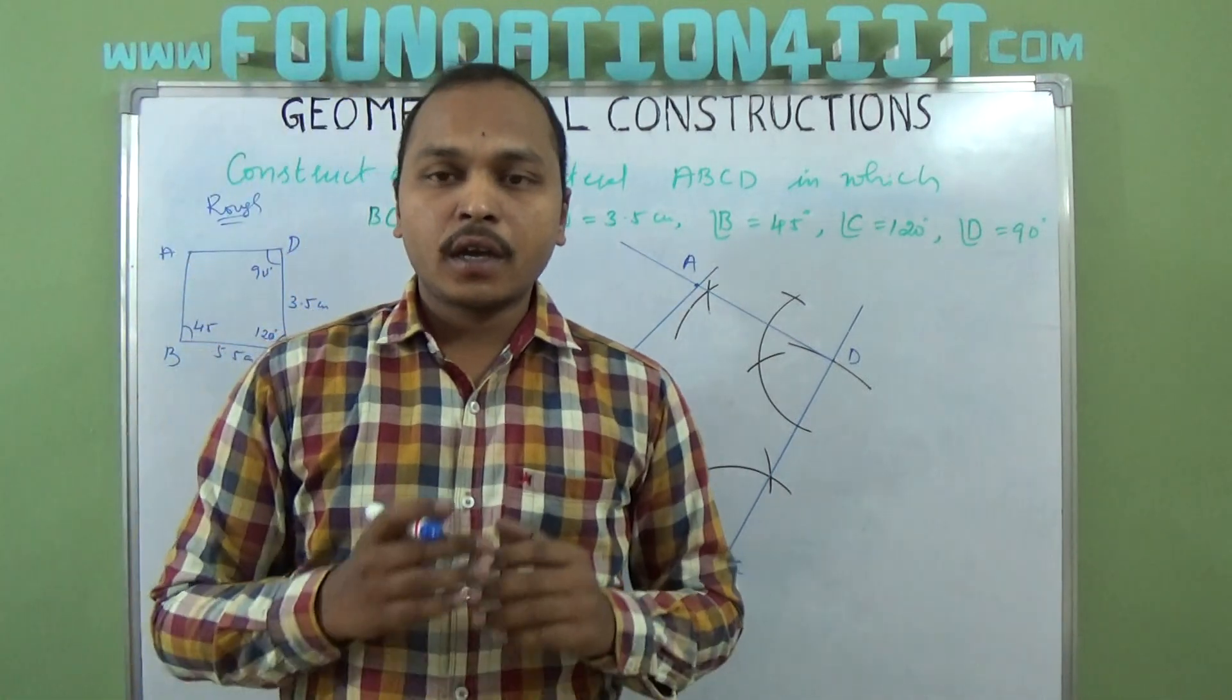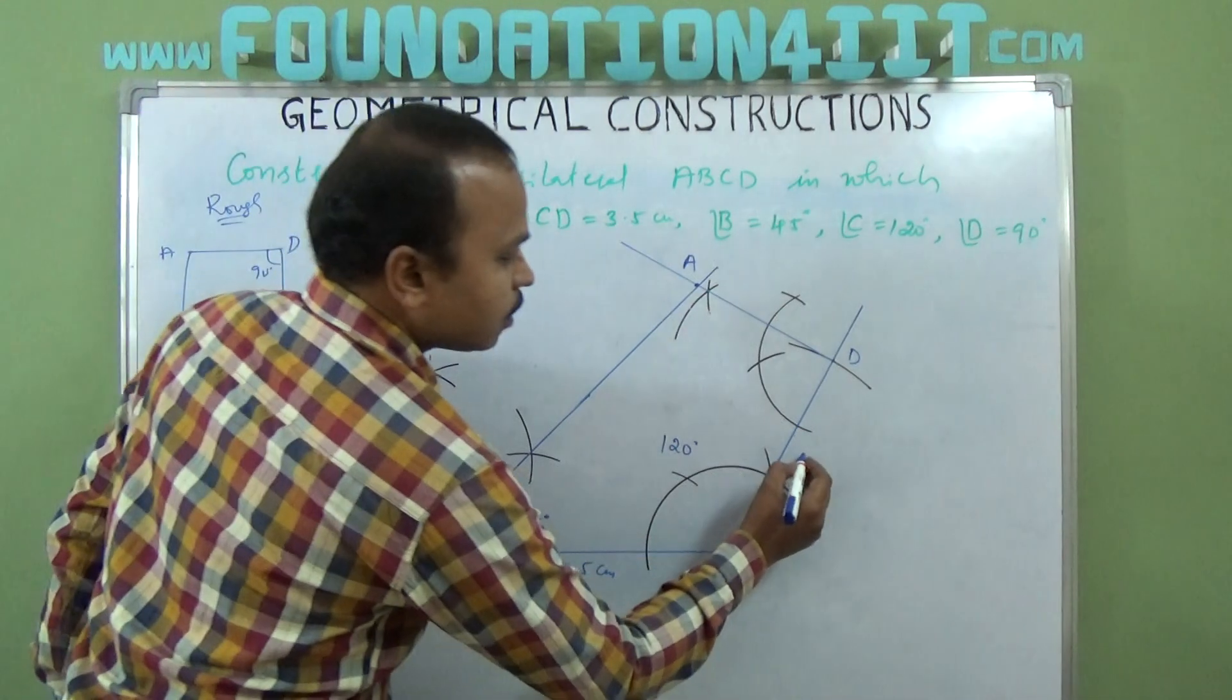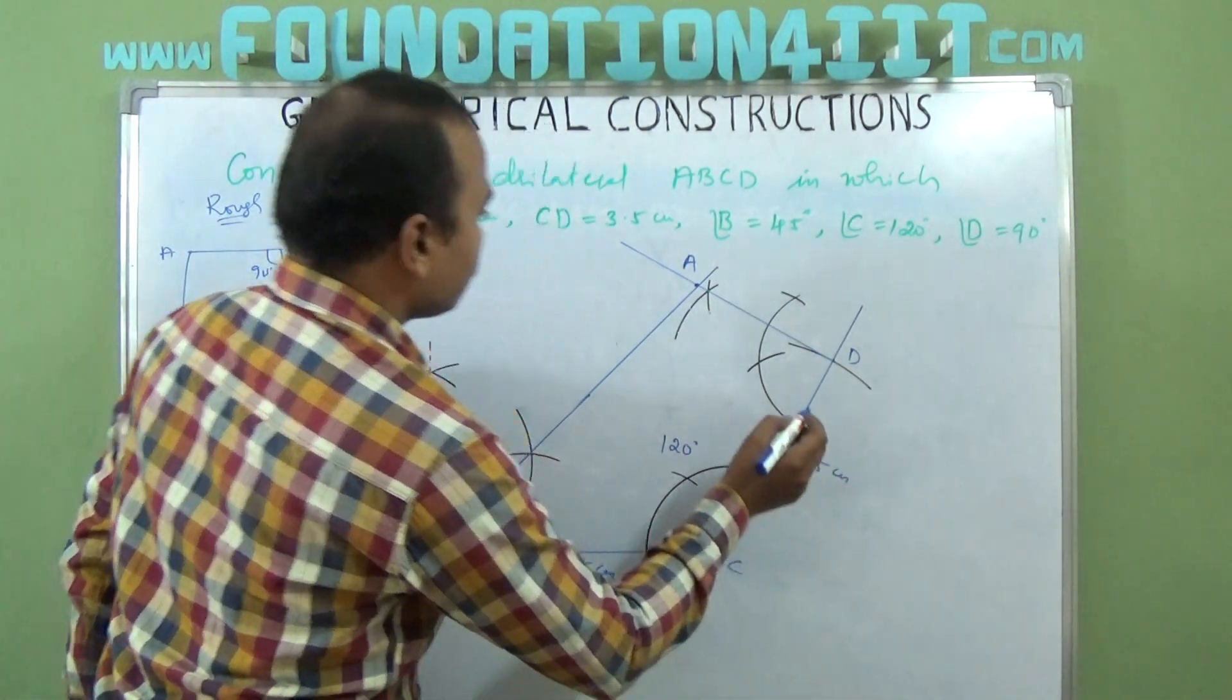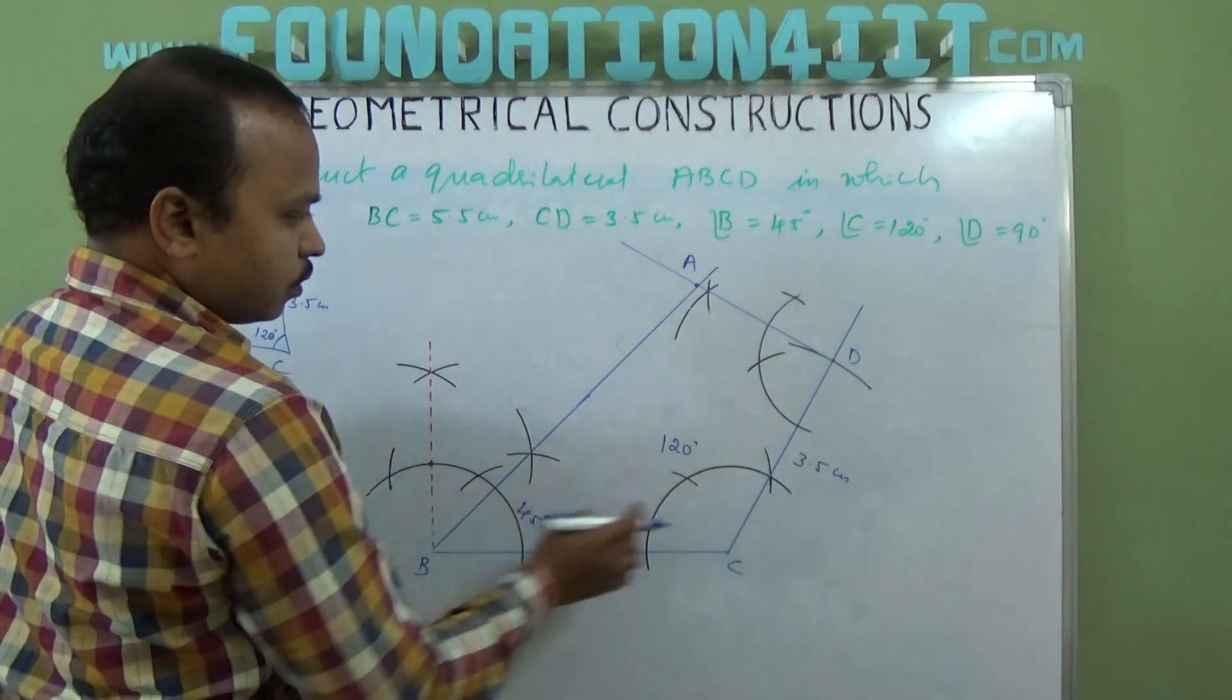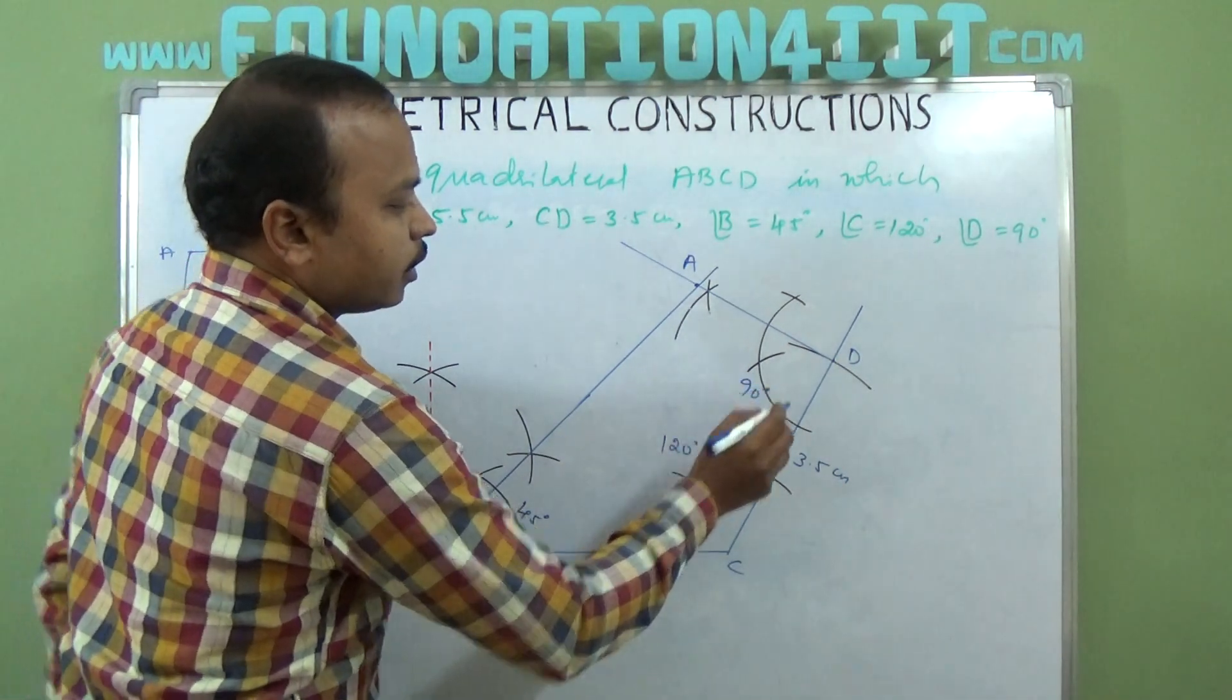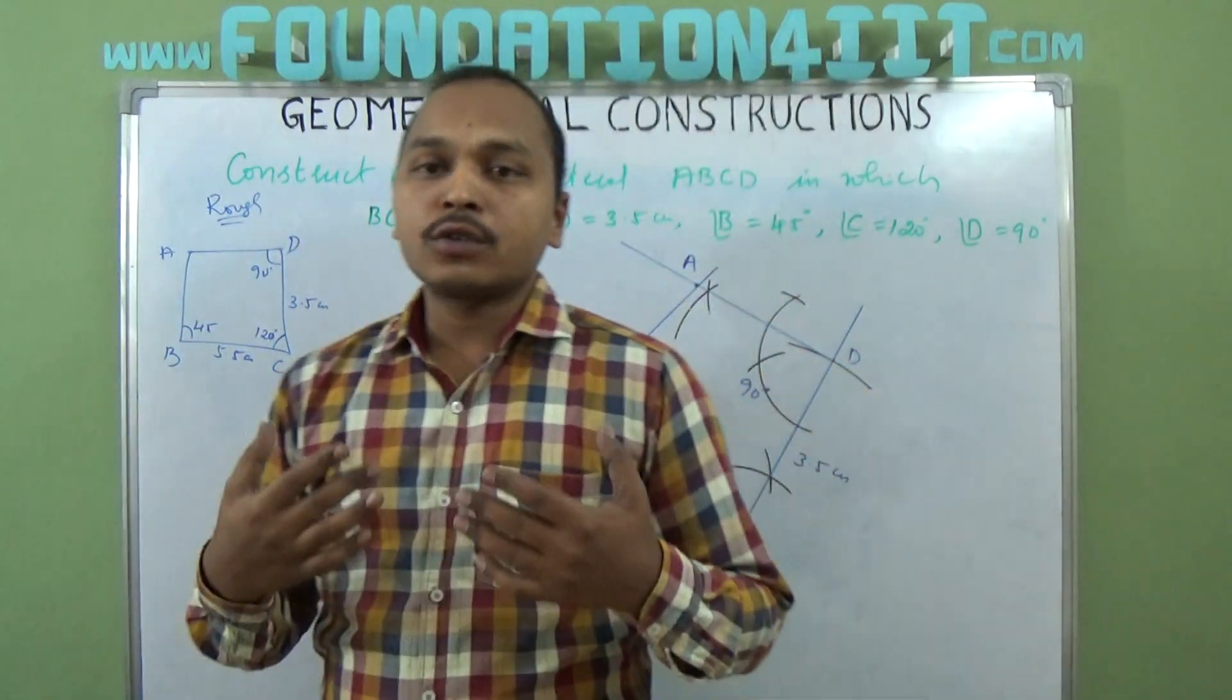Directly with three angles and two adjacent sides, you can construct. Okay, C to D is 3.5, 1, 2, and angle D is 90 degrees. Fine.